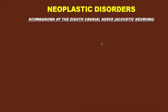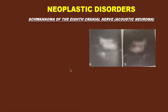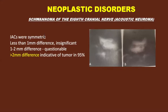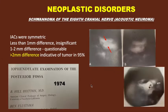The most common neoplasm of the temporal bone is schwannoma of the eighth cranial nerve, the acoustic neuroma. In the 60s and 70s, two major pieces of technology were needed: multidirectional tomography and a ruler, because internal auditory canals were symmetric. Less than one millimeter difference was insignificant, one to two millimeters was questionable, and greater than two millimeters difference in the size of the internal auditory canal is indicative of tumor in 95% of cases.